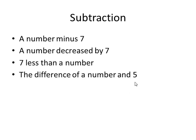Here are some phrases for subtraction, including a typo, that should be a 7. A number minus 7, decrease by 7, 7 less than a number, or the difference of a number and 7, all translate to be x minus 7.